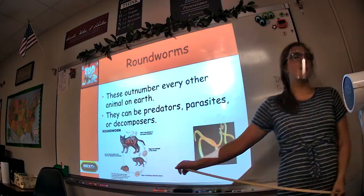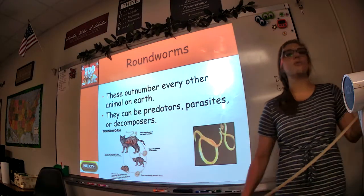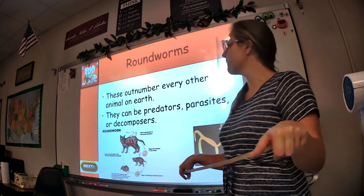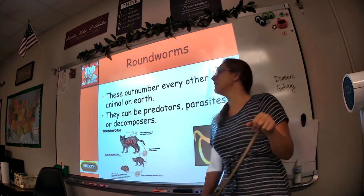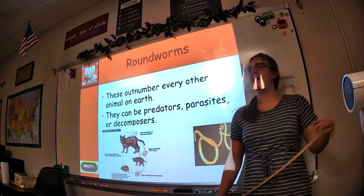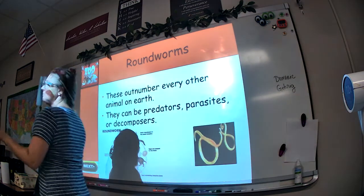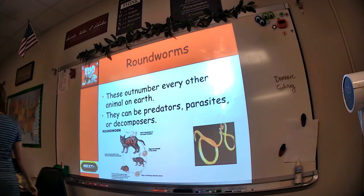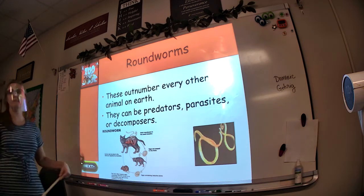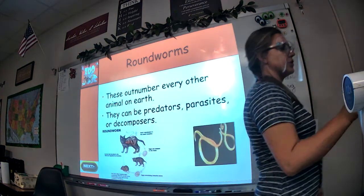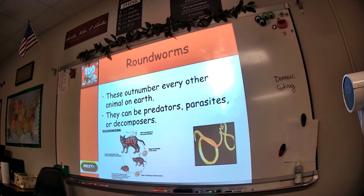Next category: roundworms. There are three different phyla for different types of worms, so we're going to talk a lot about worms. Roundworms outnumber every other animal on earth — there are more roundworms on earth than any other animal. You don't always see them because they're either living inside other animals, living in the ground, or living in trees, dirt, or soil. So we don't interact with them a whole lot, but there are tons of them on earth.